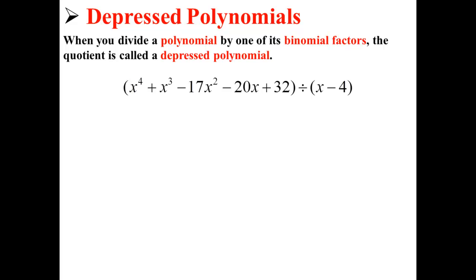For example, let's say we have this expression: x to the fourth plus x to the third minus 17x squared minus 20x plus 32, all divided by x minus 4.